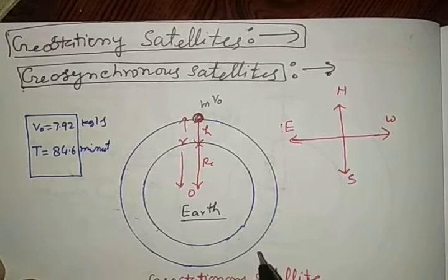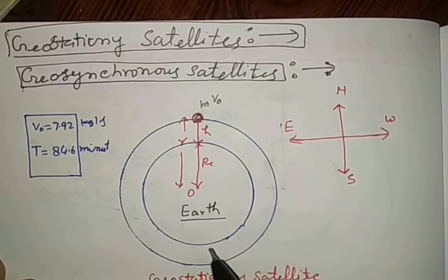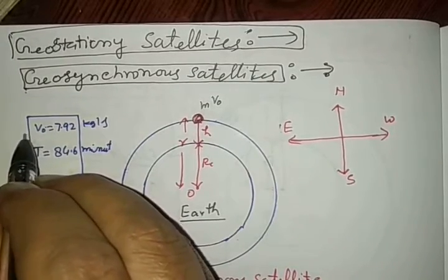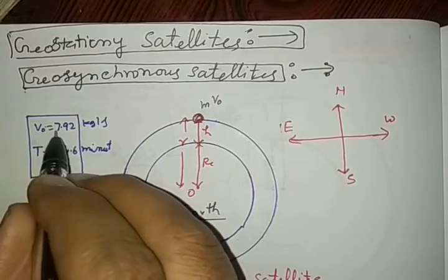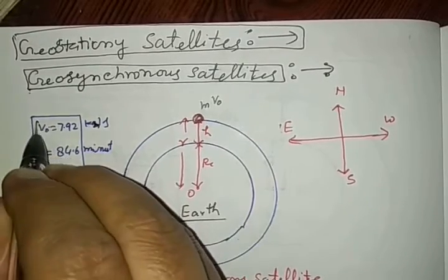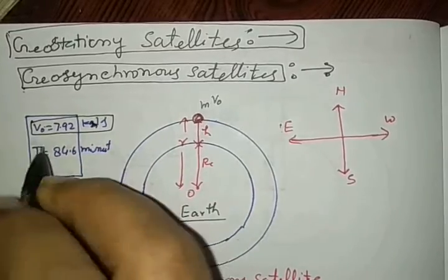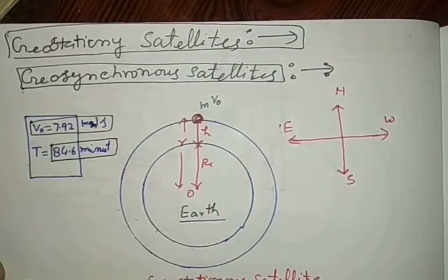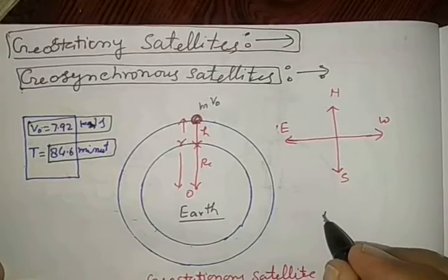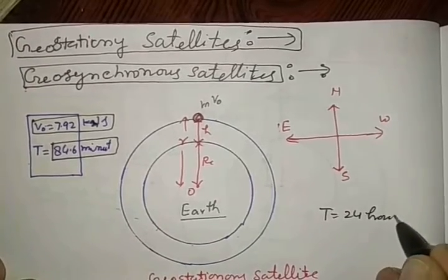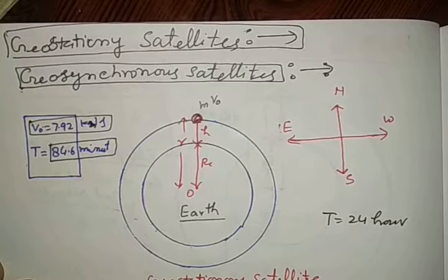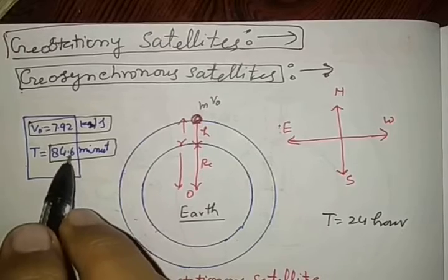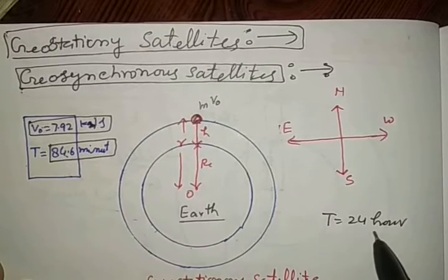The normal satellite which is near to the Earth's surface has very high speed, 7.92 km per second, and its time period is very less, 84.6 minutes. But geostationary satellite has time period of 24 hours. We want to change its time period from 84.6 minutes to 24 hours.